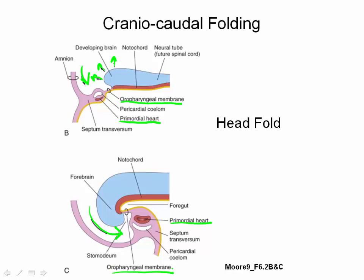Through this mechanism, the primitive heart is brought into proper anatomical position, which is caudal to the head region. The septum transversum is also reoriented in a position caudal to the heart, and this structure will eventually contribute to formation of the diaphragm.